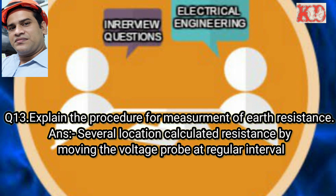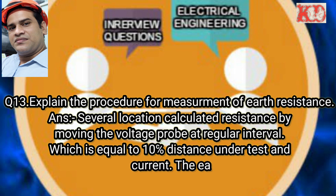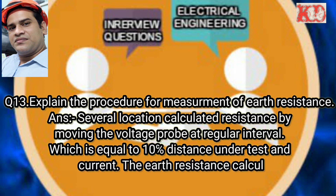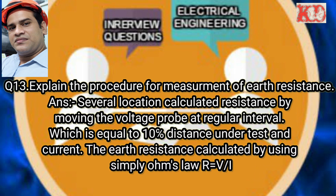Question number thirteen: Explain the procedure for measurement of earth resistance. Calculate resistance by moving the voltage probe at regular intervals equal to ten percent of the distance under test. The earth resistance is calculated using Ohm's law: R = V / I.